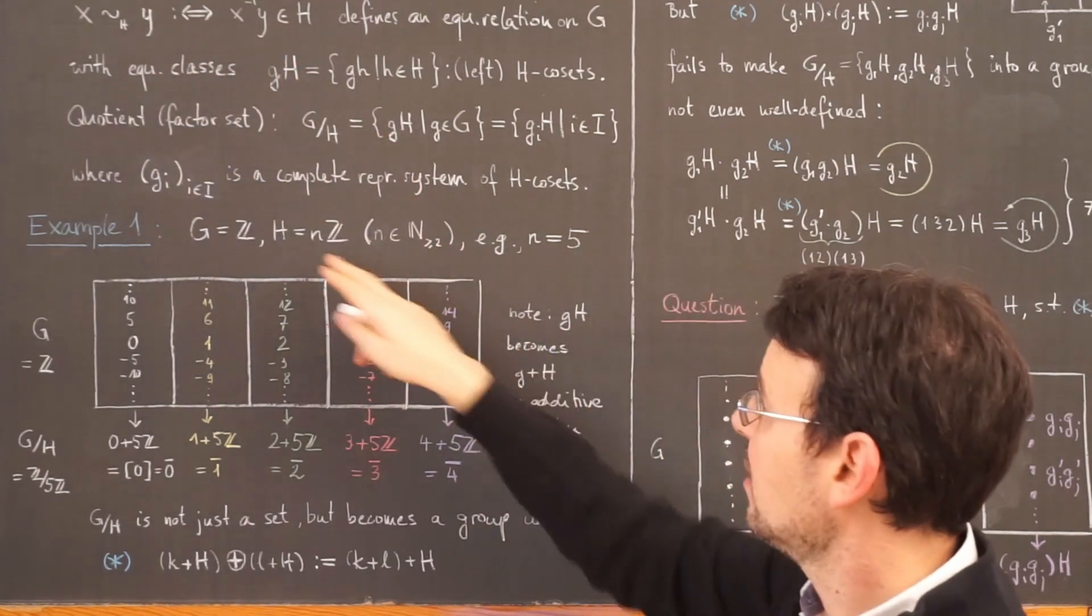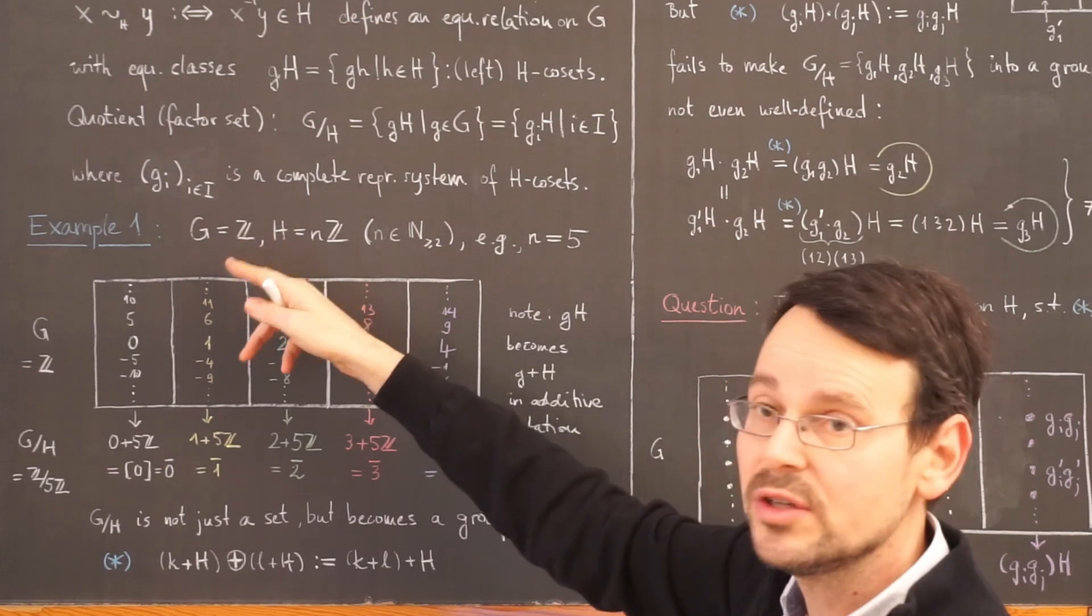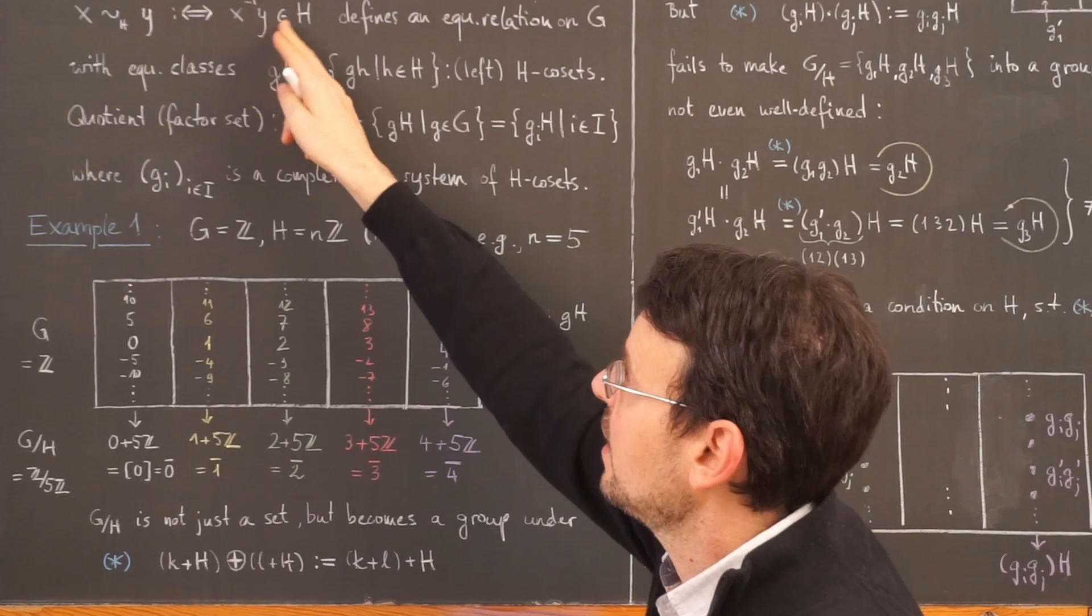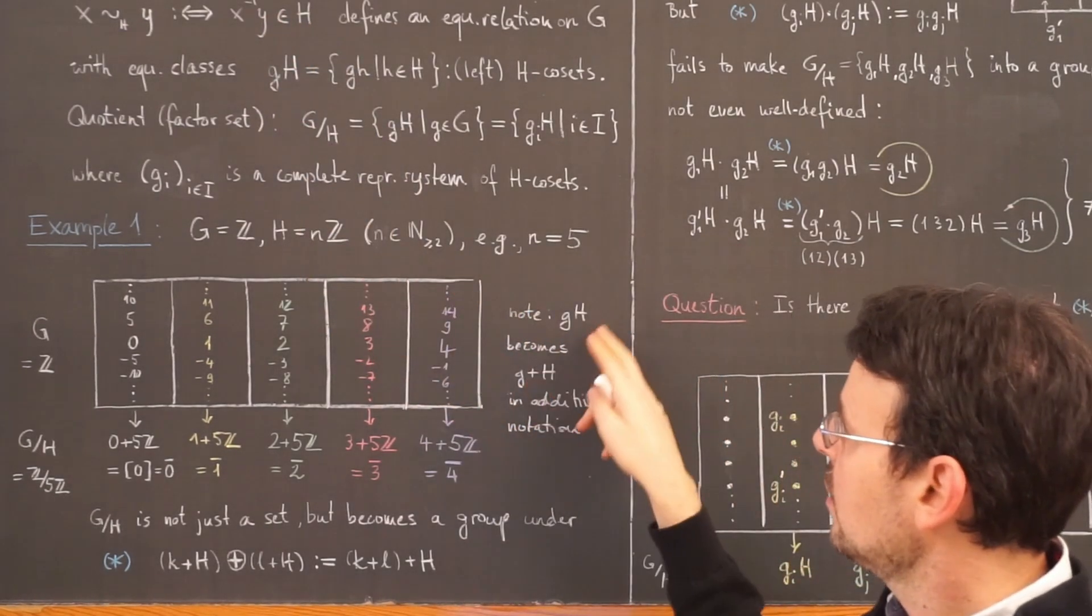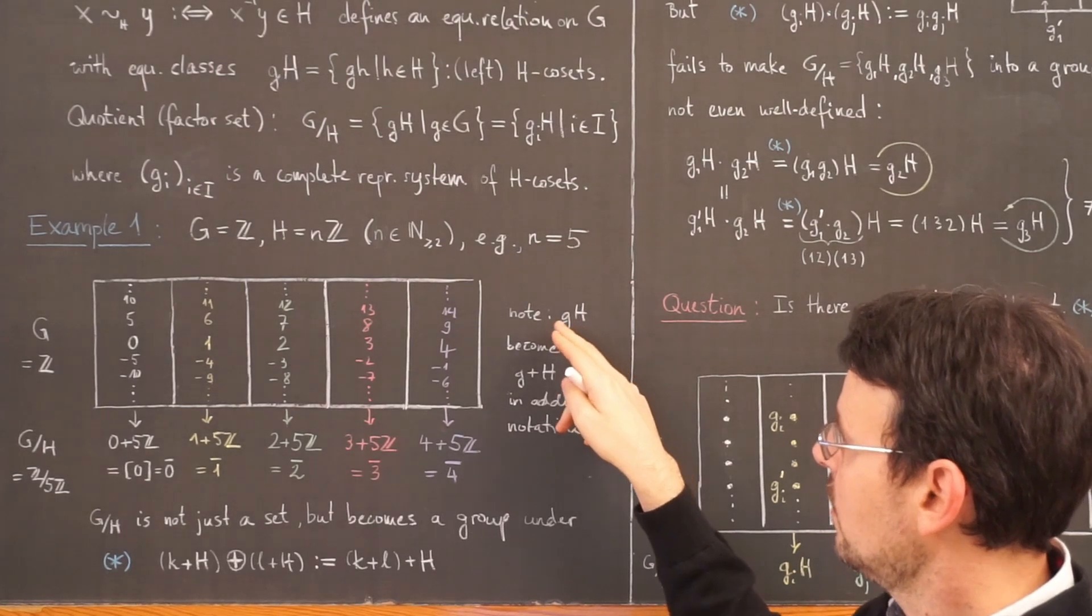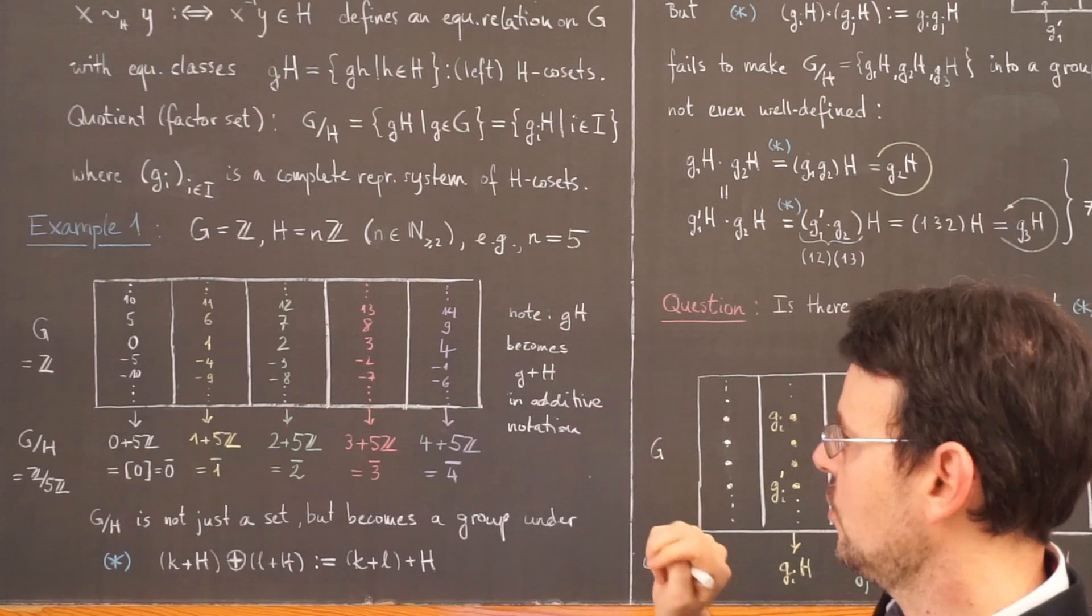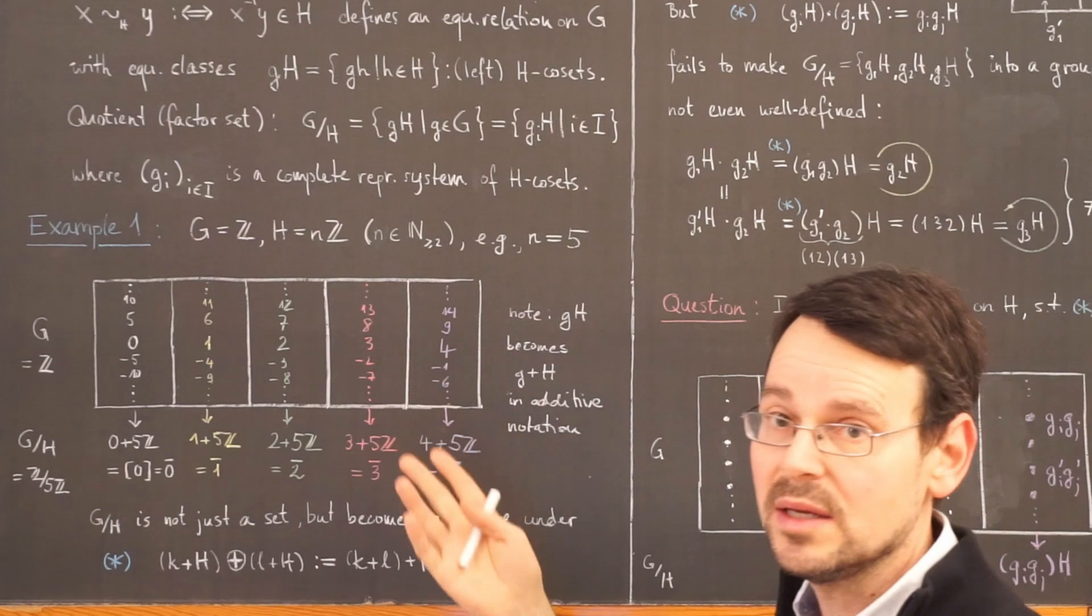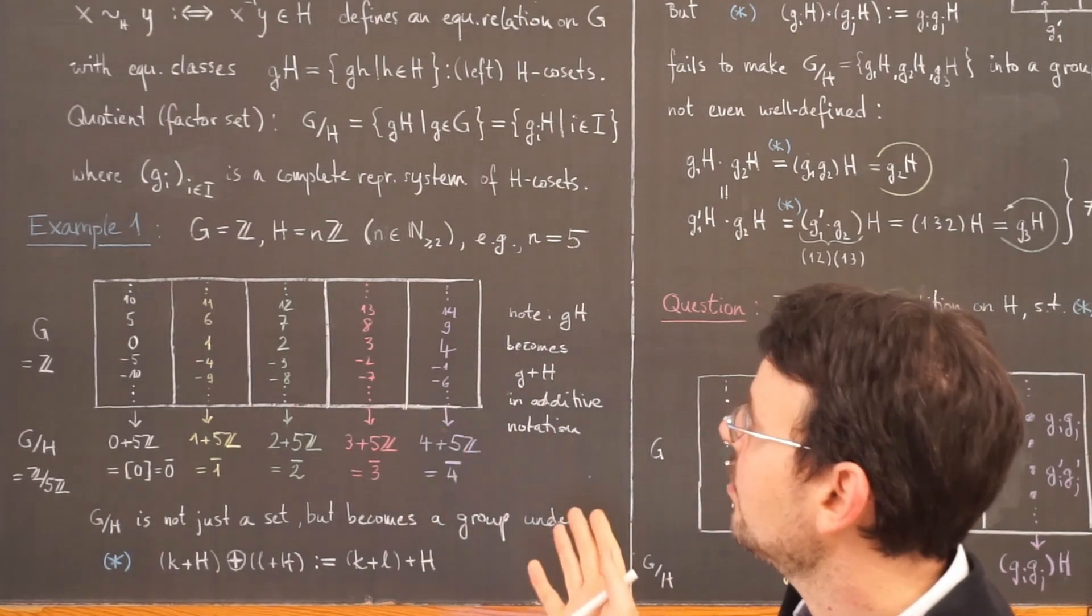because we write the composition here additively, we have addition on the integers, becomes minus x plus y is an element of this here. And we denote the left cosets not with g times h, but with g plus h. So do not get confused. This here is exactly the same only in a slightly different notation. So what happens?